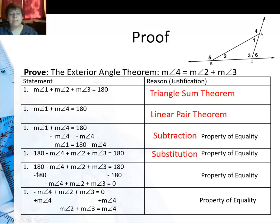Now I can subtract 180 from both sides and I get the sum of these angles, the negative measure of angle four plus measure of angle two plus measure of angle three equals zero. So I subtracted 180 from both sides using the subtraction property of equality.